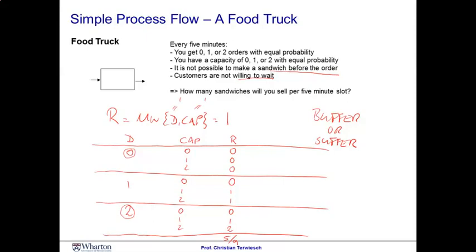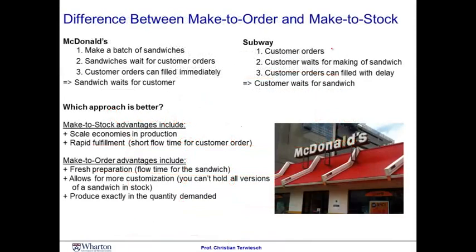Buffer or suffer — there is no single right answer. You notice this by comparing the two biggest restaurant chains in the world: Subway and McDonald's. At Subway, customers wait for their sandwiches to be made, because the sandwiches are made to the customer's order. The customer orders the sandwich and then stands in line, potentially waiting with other customers, until their specific sandwich is completed. McDonald's follows a different strategy. At McDonald's, the restaurant makes a whole batch of sandwiches — not just one cheeseburger, they do 20 in a row. Then the sandwiches will wait for the customer orders, so instead of the customer waiting for the sandwich, the sandwich waits for the customer.